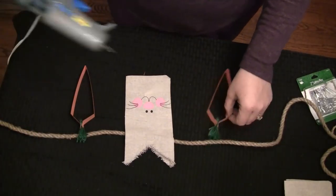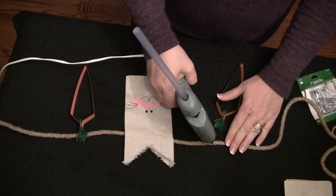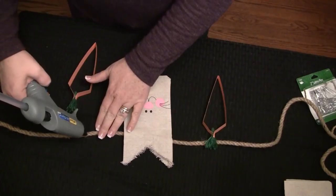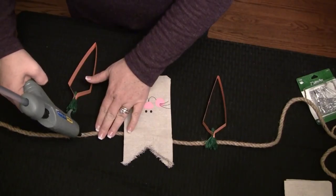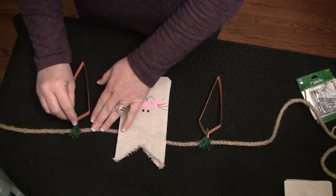So then I just alternate between rabbit and carrot and I actually did glue the carrots to the rope with the hot glue gun. So you just alternate this on every other side. So you're just going to do a bunny, carrot, bunny, carrot and stick it all together to make your garland.